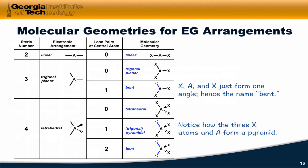Moving down to a steric number of three, if we have no lone pairs at the central atom, the molecular geometry matches the electron group arrangement — and you'll notice that this happens for every electron group arrangement as we move through. If we have one lone pair attached to the central atom A, then we arrive at a bent structure where xAx just looks like a kind of jiggled linear structure with a smaller bond angle than 180 degrees. We can stop there because with two lone pairs on the central atom, we again have only one bond of A to an x atom, so geometry becomes a non-issue.